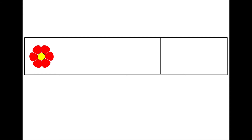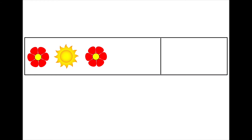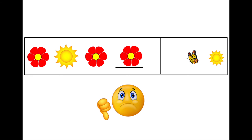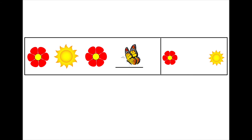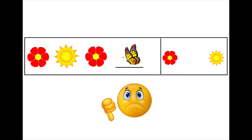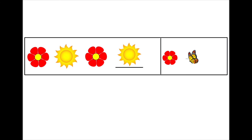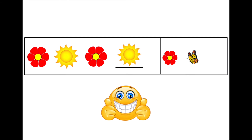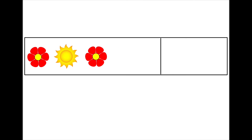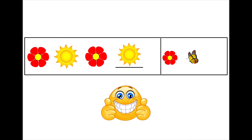So again, let's learn about sequence. Let's start with a flower, a sun, a flower... and what's next? Is it the flower? No. Is it the butterfly? Nope. Is it the sun? Very good! Because we have the sequence: flower, sun, flower, and sun. Good job! Let's circle the sun.